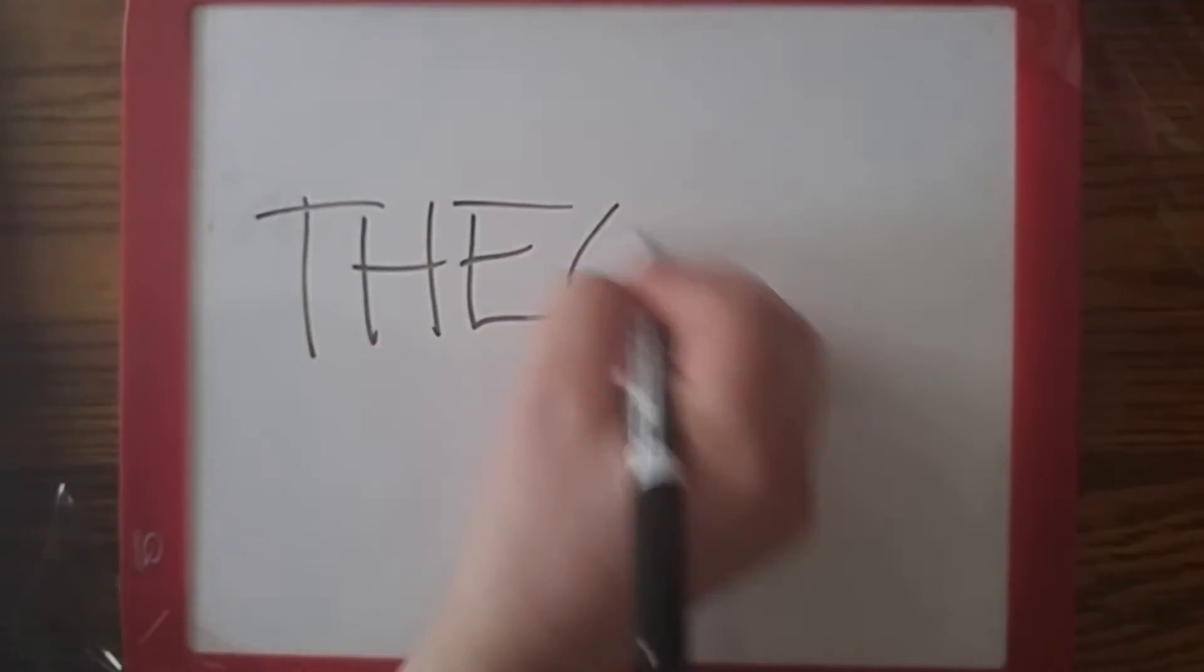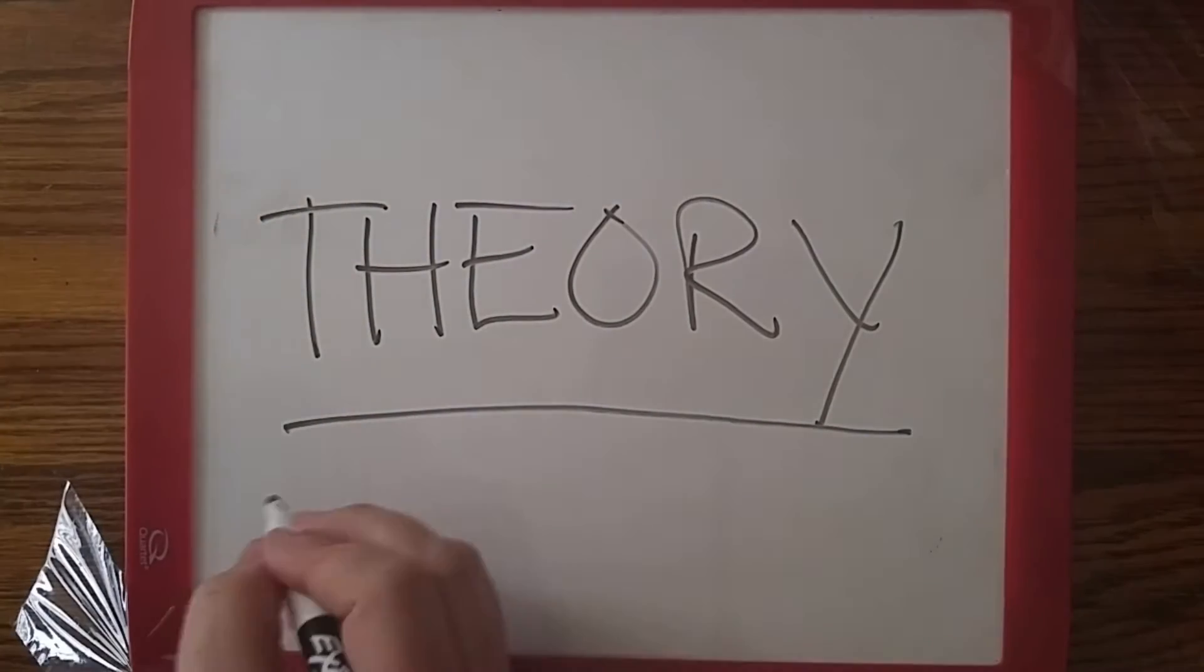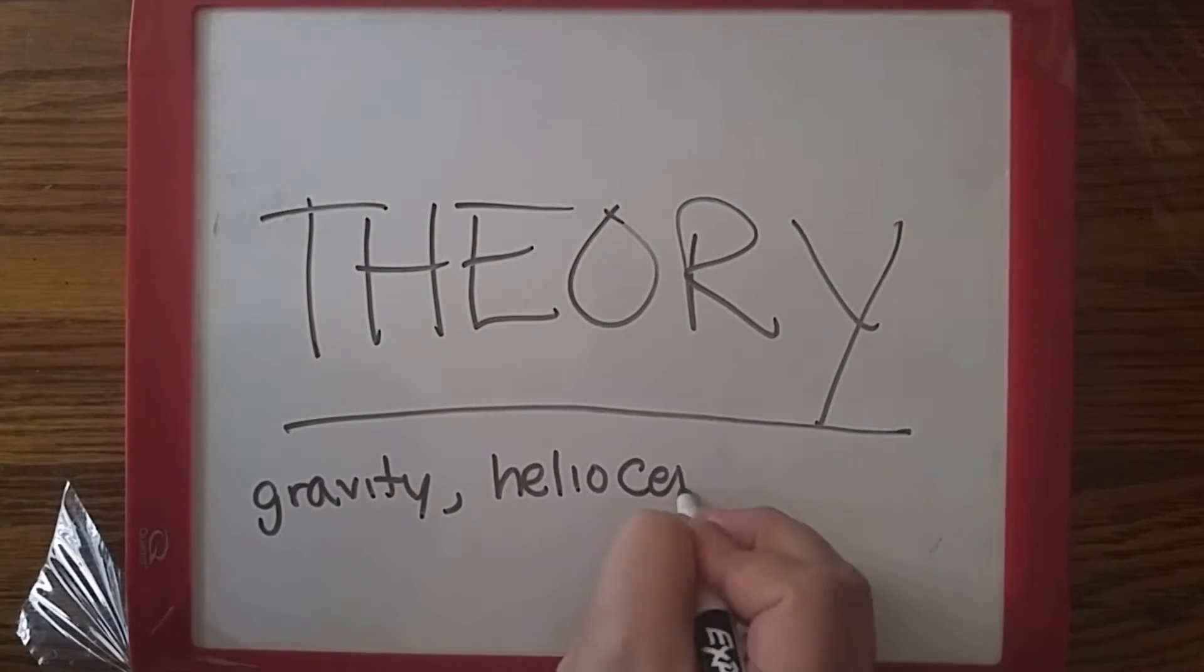Other examples of scientific theories include the theory of gravity, cell theory, and heliocentric theory.